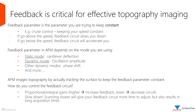In both modes, there is a feedback parameter set by the user, which the system attempts to keep constant. A good example is cruise control in a car, where the speed is kept constant by the car's computer, slowing it down if it goes above the set speed and speeding it up if it goes below. In static mode, the feedback parameter is cantilever deflection, and in dynamic mode, it is oscillation amplitude. Other dynamic modes exist with different feedback parameters, such as phase shift.